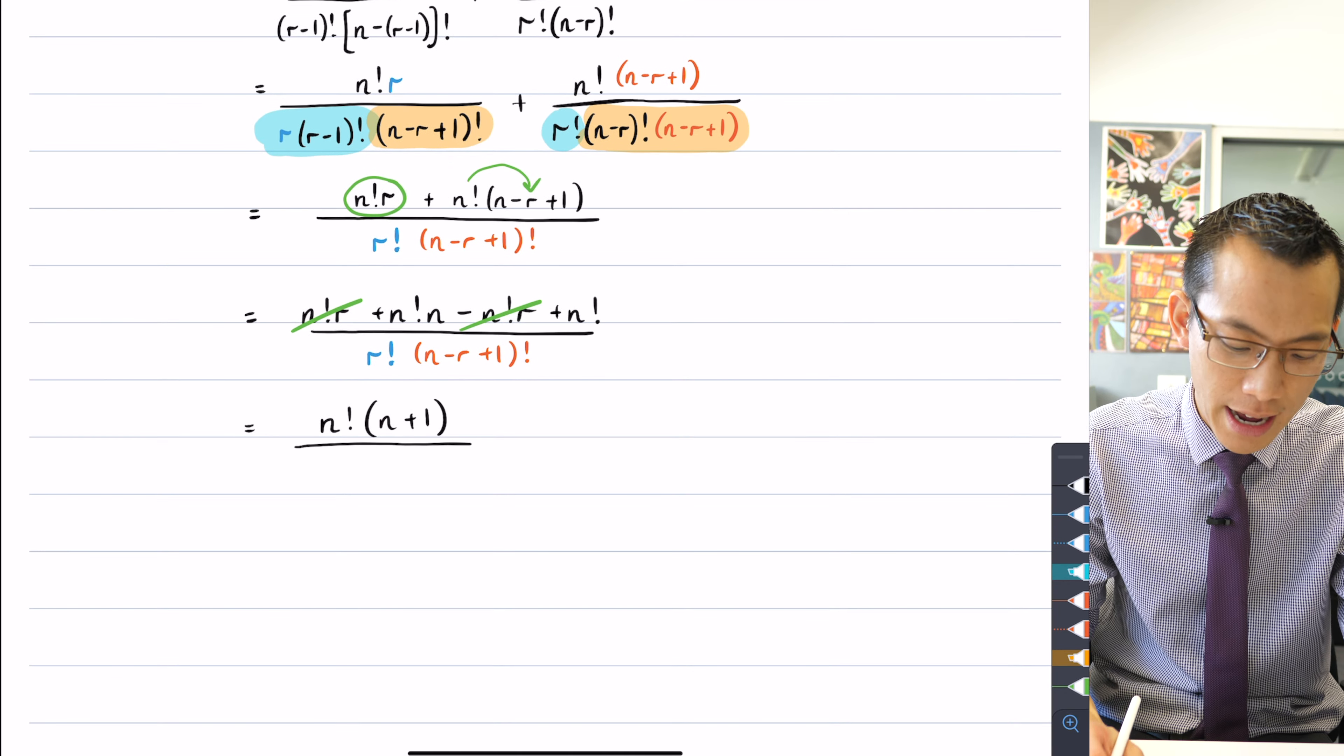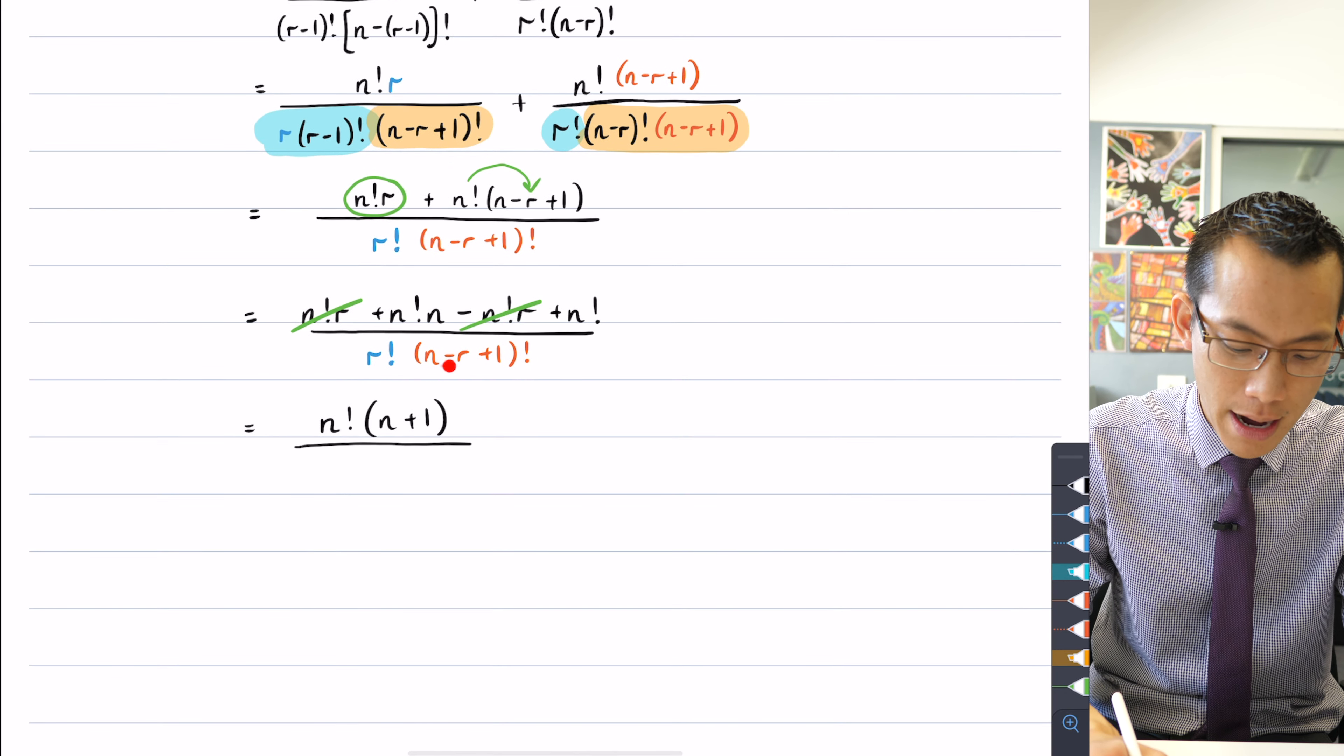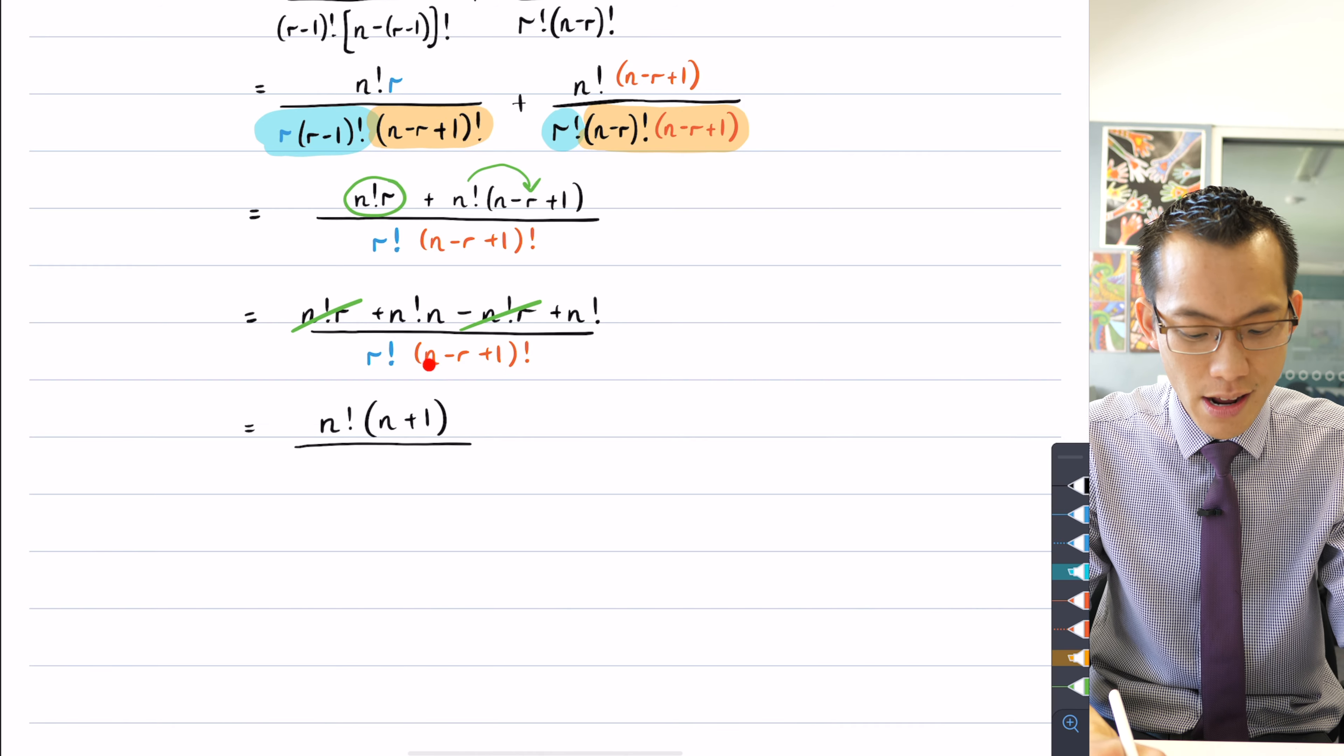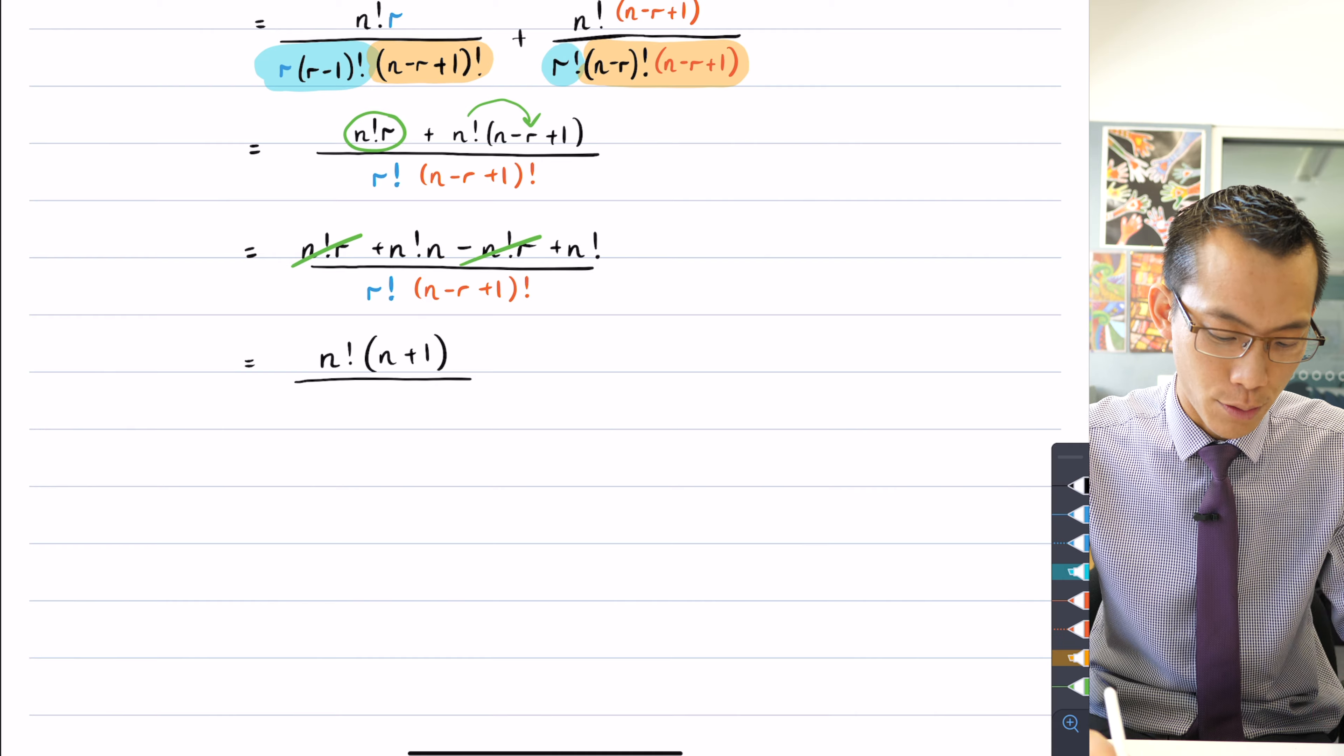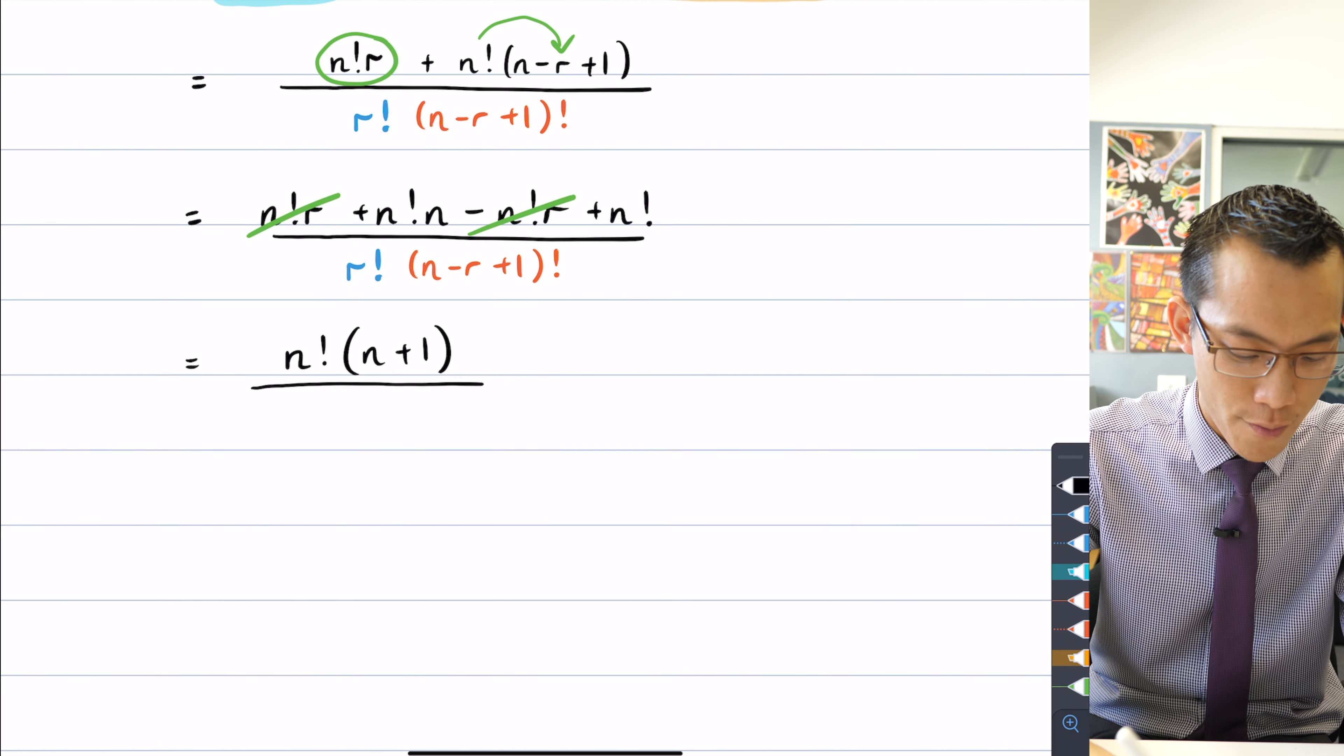This n minus r plus 1 I can rearrange it so it's n plus 1 take away r and that makes the n plus 1 more visible. So let's write that in a more obvious way.